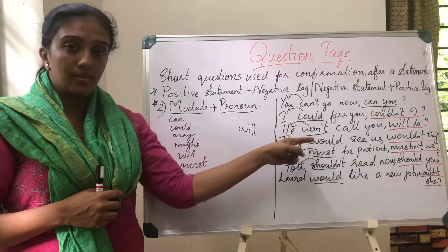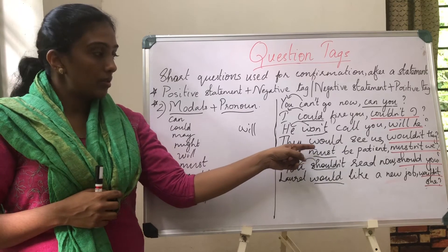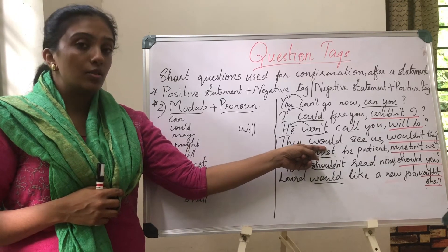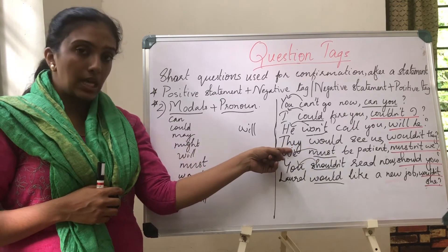'They would see us.' It's a positive statement, so 'would' is the modal. Changing it into the negative, the tag becomes: wouldn't they.